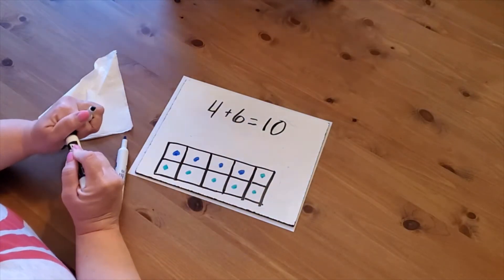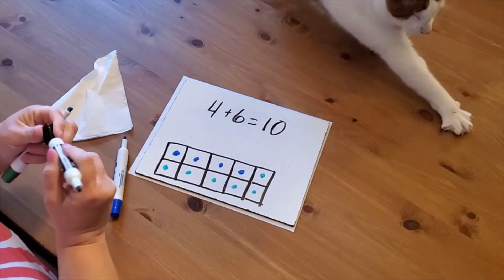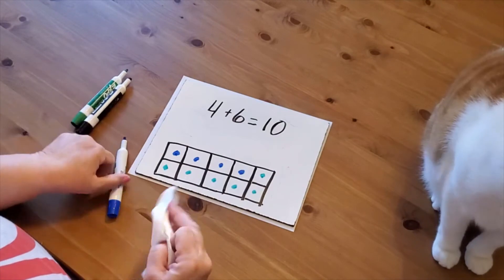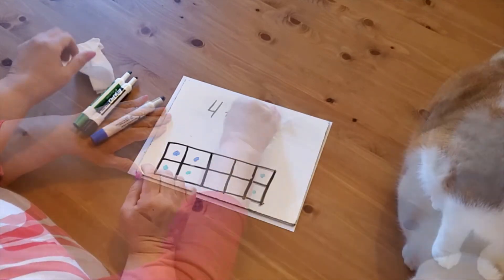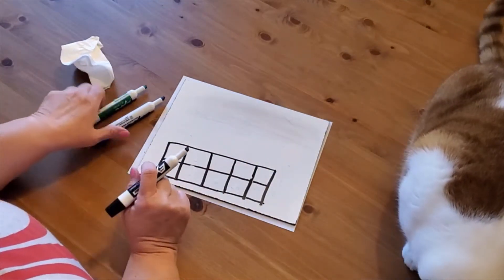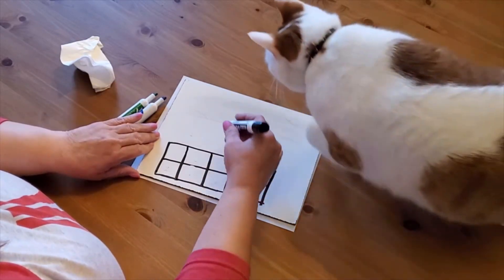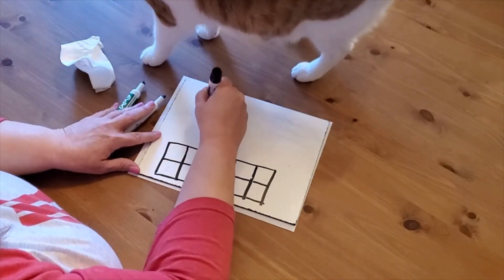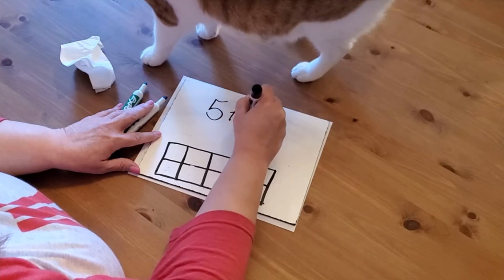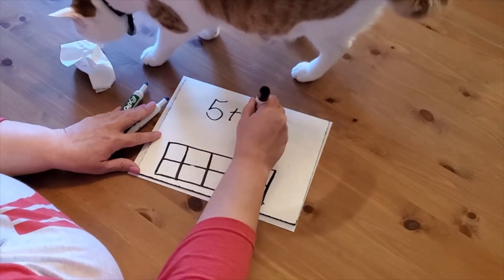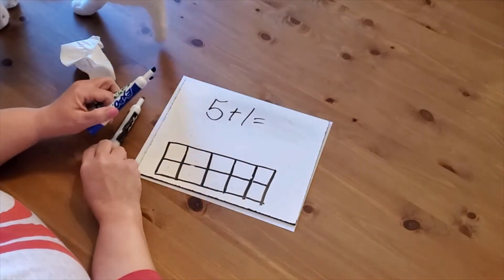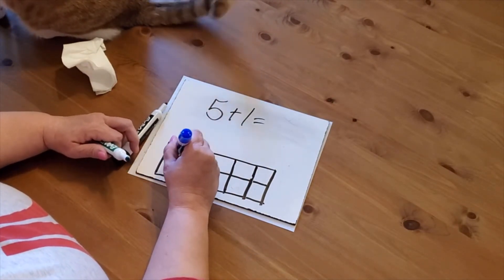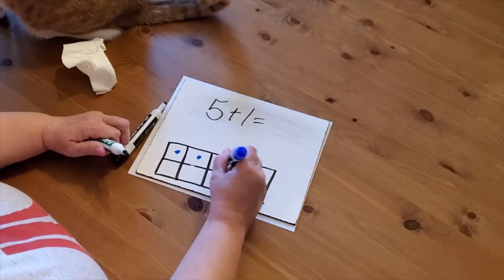Okay, let's erase and look at another one. They might give you an addition problem something like 5 plus 1 equals. Again, you're going to have to use two different colors: one, two, three, four, five, plus one more.